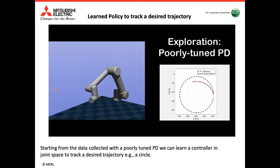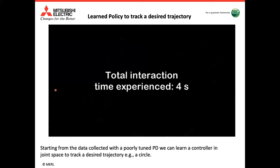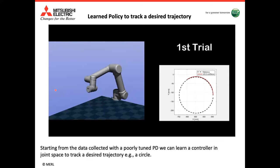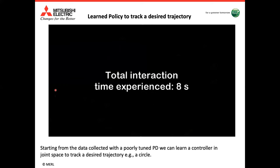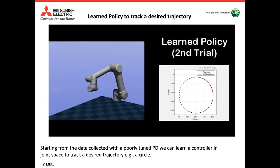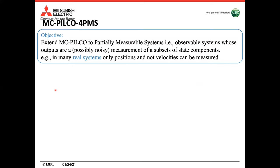As you can see in the video, starting from data collected with a purely tuned PID, we can learn a controller in the joint space to track a desired trajectory — in this case, a circle. We can see that in only a few interactions with the manipulator, the algorithm learns how to track the circular trajectory.